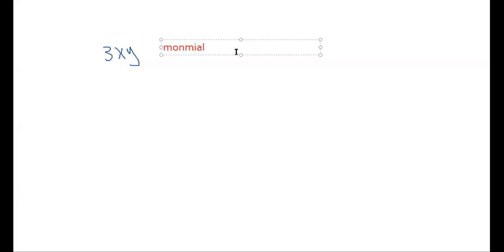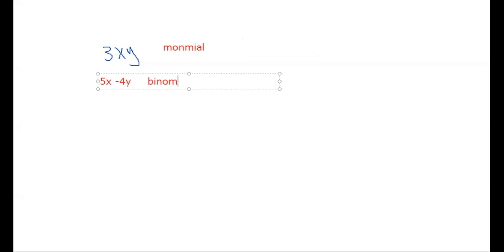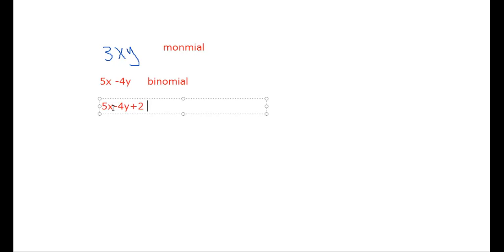If a polynomial consists of more than one term, like 5x minus 4y — this one has two terms, so it's called a binomial. If it has three terms, like 5x minus 4y plus 2, count how many terms you have: three. So this one is called a trinomial. And if there are more than three terms, we call it a polynomial.